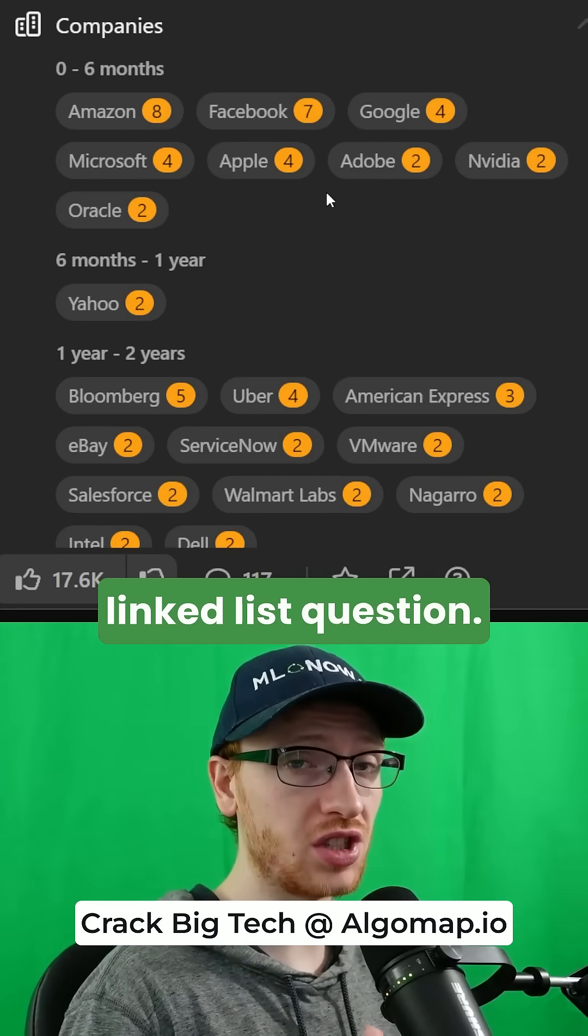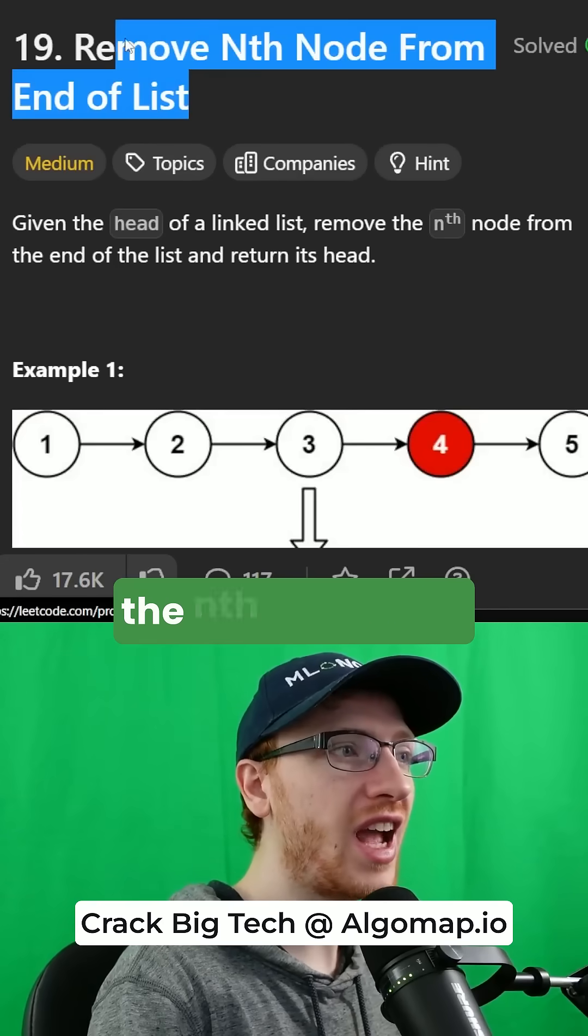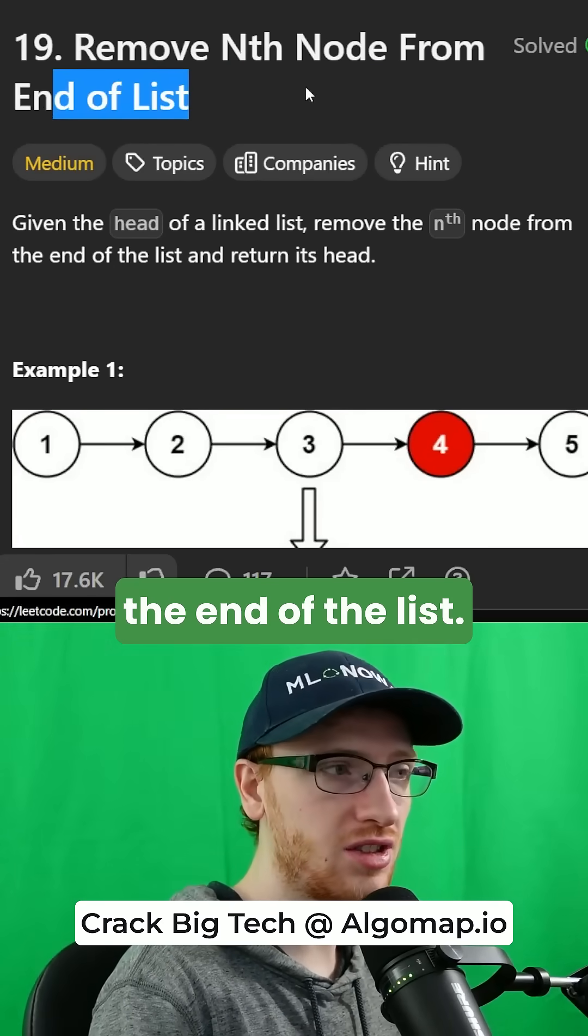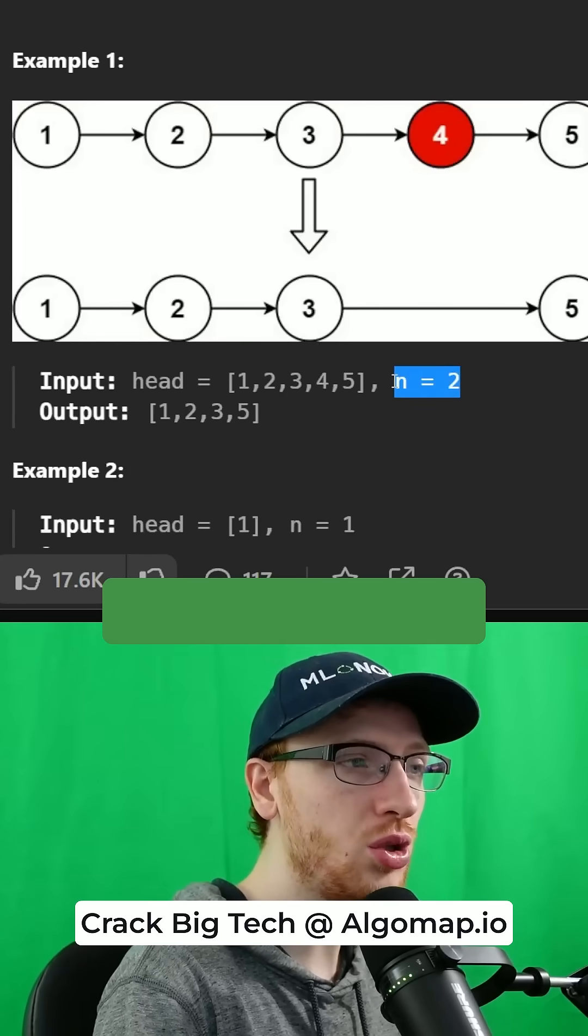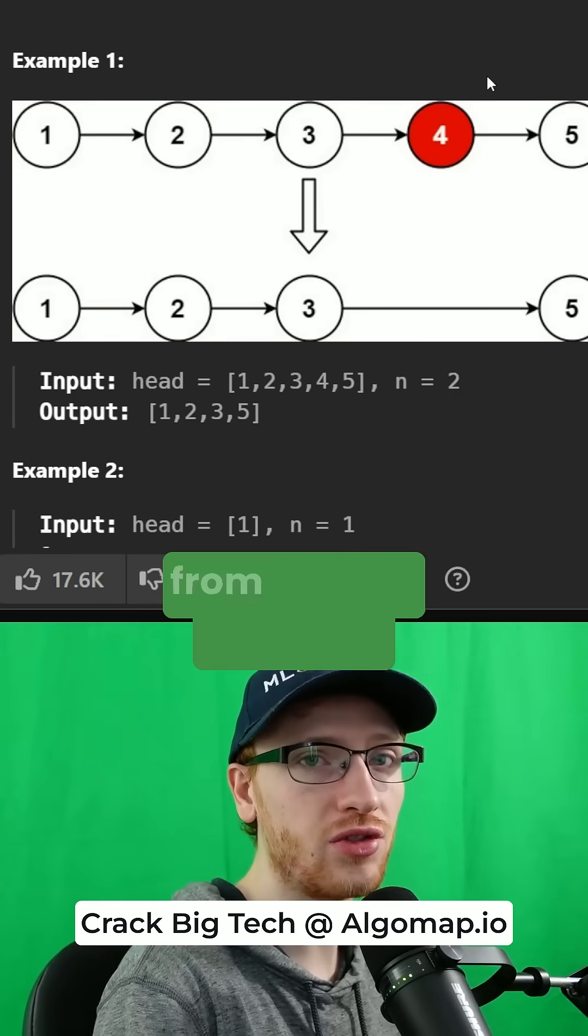FAANG companies love this linked list question, so let's check it out. We want to remove the nth node from the end of the list. So with this list and n equals 2, we want to remove the second node from the end of the list.